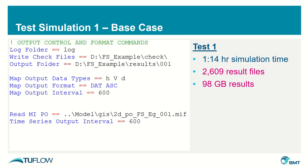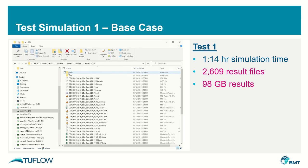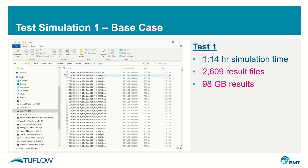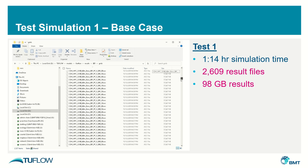Looking at the output controls that were used to define what results should be written and how they should be written, you can see that we have water level, velocity and depth output in DAT and ASCII format at a 600 second — or 10 minute — interval. If you go into the grids folder, you'll see thousands upon thousands of ASC files every 10 minutes for each of those output types: velocity, level and depth.